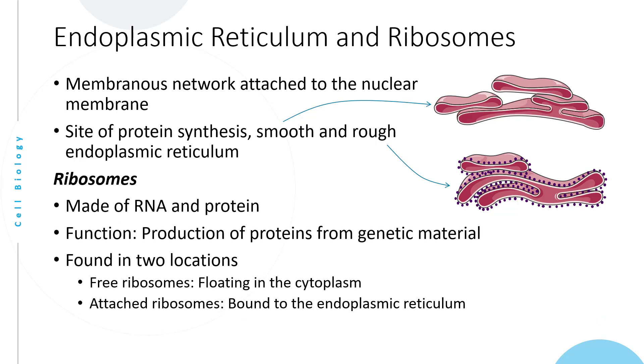The ribosomes are made of RNA and protein. They are the site of protein synthesis. They are found in two locations: free ribosomes floating in the cytoplasm, and attached ribosomes bound to the endoplasmic reticulum, which is known as the rough endoplasmic reticulum.